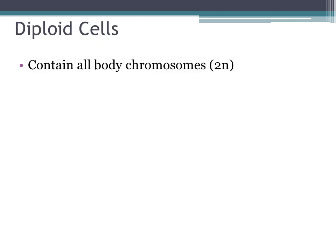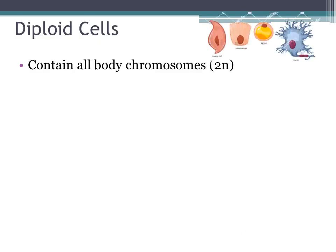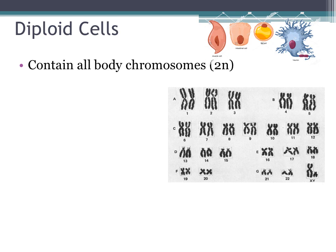Let's start with diploid cells. Diploid cells, as mentioned earlier, include muscle cells, intestinal cells, nerve cells, fat cells, and most of our body cells. They contain all body chromosomes, which are symbolized by 2N, and they have two sets of chromosomes, as shown in this karyotype.